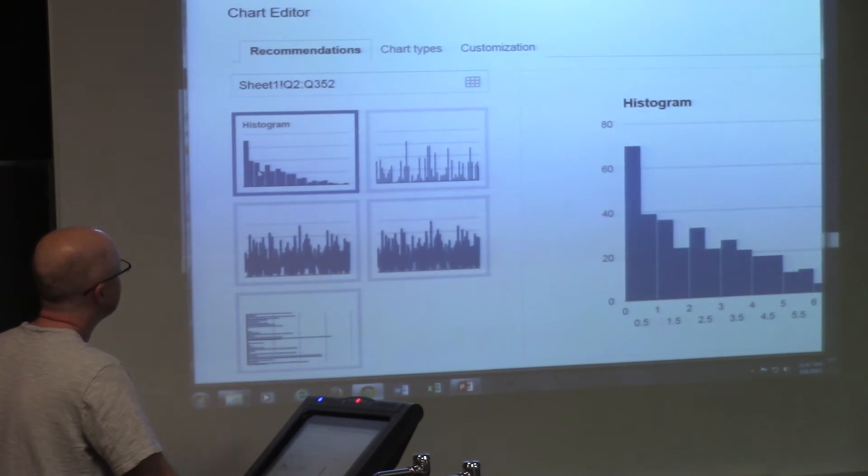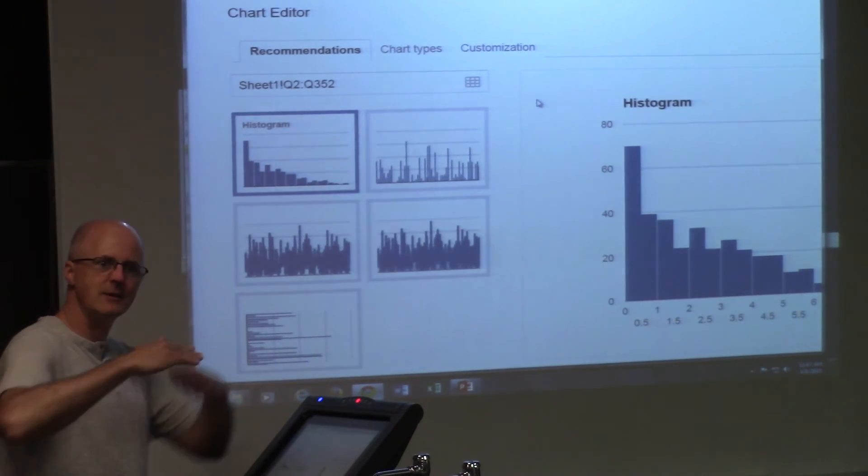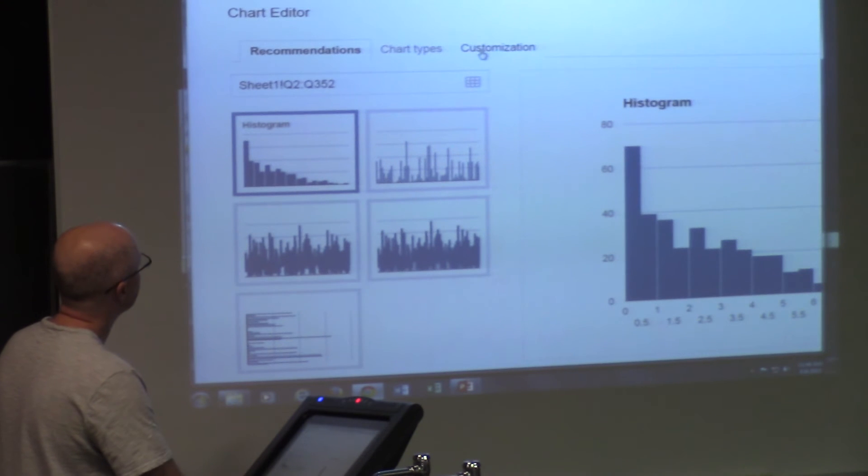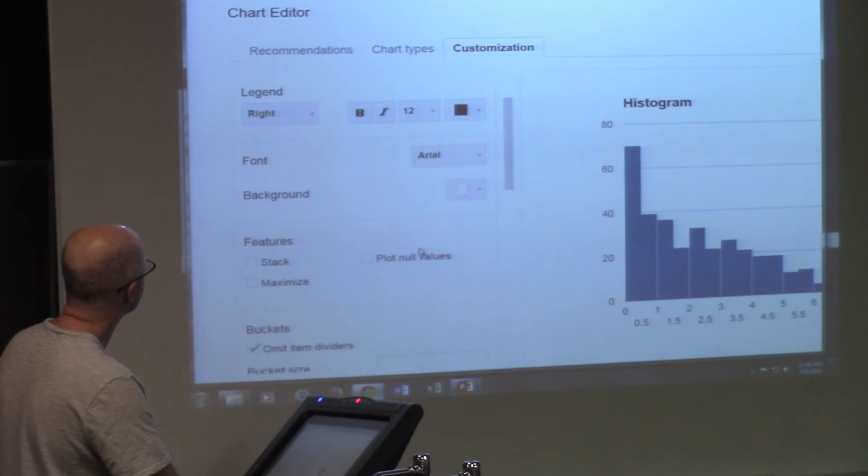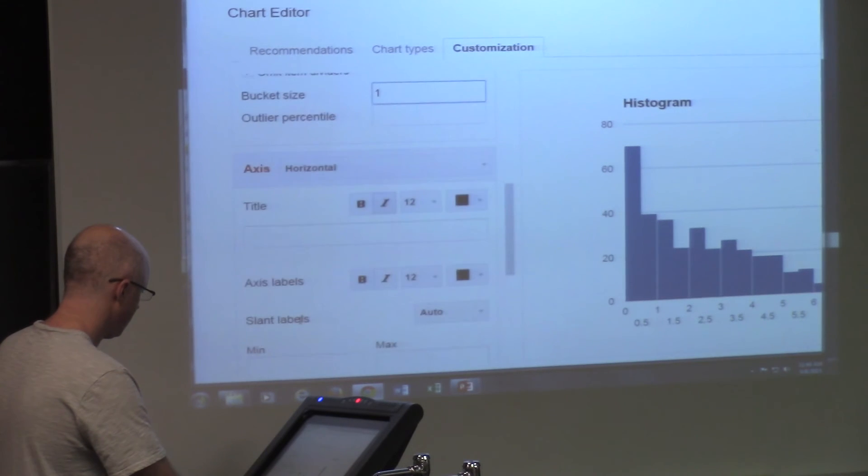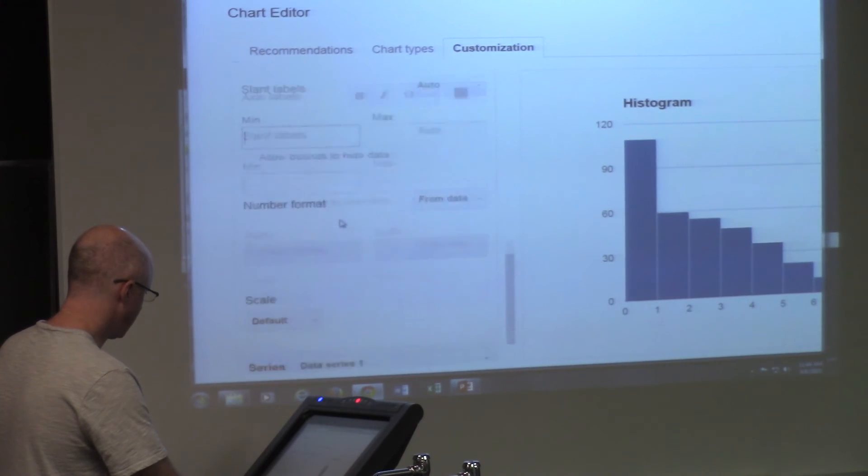And go and insert a histogram. And lo and behold, it's neither, it's neither uniform nor triangular. Or maybe you'd call it a different kind of triangular. You should get something to this effect.